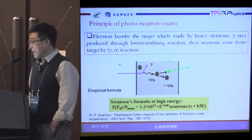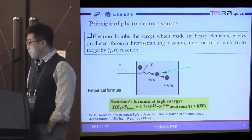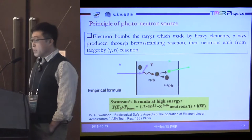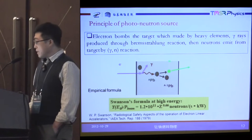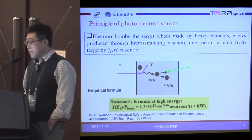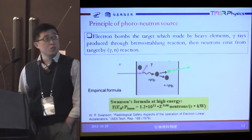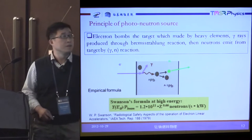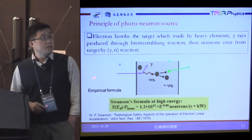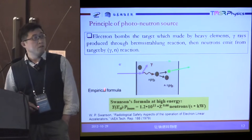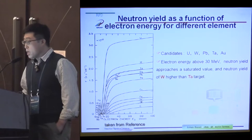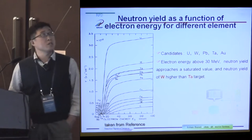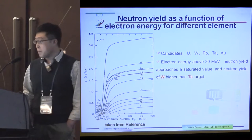The principle of photoneutron source: electrons hit the target which is made of heavy elements, and gamma rays are produced through bremsstrahlung reactions. Then neutrons are emitted from the target by gamma-nuclear reactions. Here I give empirical formulas to calculate the neutron flux. Neutron yield is a function of electron energy for different elements.